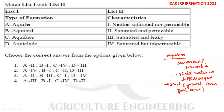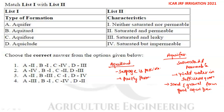An aquitard allows seepage but yields only insignificant amounts of water compared to an aquifer; it is partly permeable. Sandy clay is the best example of an aquitard.